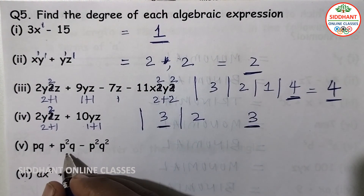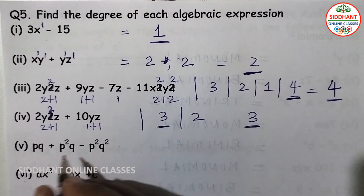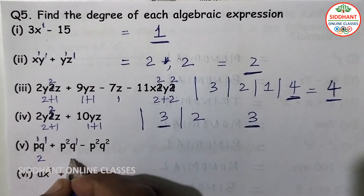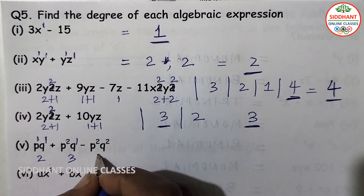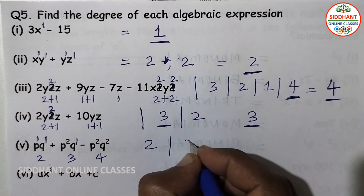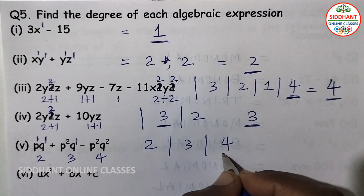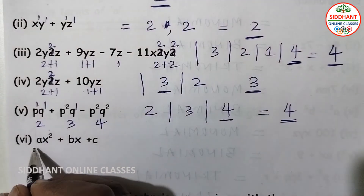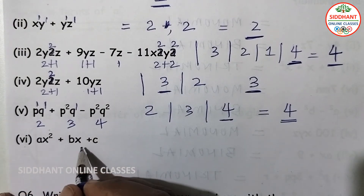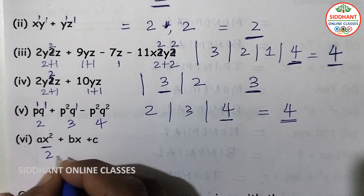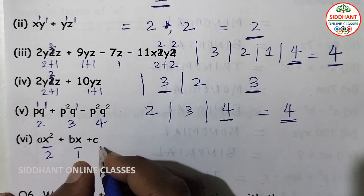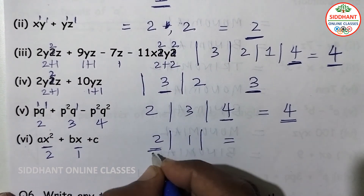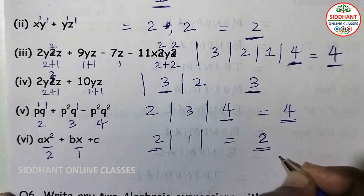Fifth expression — pq, p square q, p square q square: degrees are 1 plus 1 equals 2; 2 plus 1 equals 3; and 2 plus 2 equals 4. The highest degree is 4, so the degree of that algebraic expression is 4. Sixth — ax square plus bx plus c — degrees are 2, 1, and 0; highest is 2.